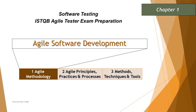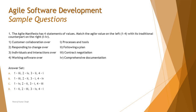The very first question coming up on your screen is a fundamental question about the Agile Manifesto and its four core values. The question says: 'The Agile Manifesto has four statements of values — match the Agile values on the left (one to four) with their traditional counterparts on the right (Roman numerals one to four).' For these types of questions, the better you know the standard definitions, the easier it is to answer correctly.